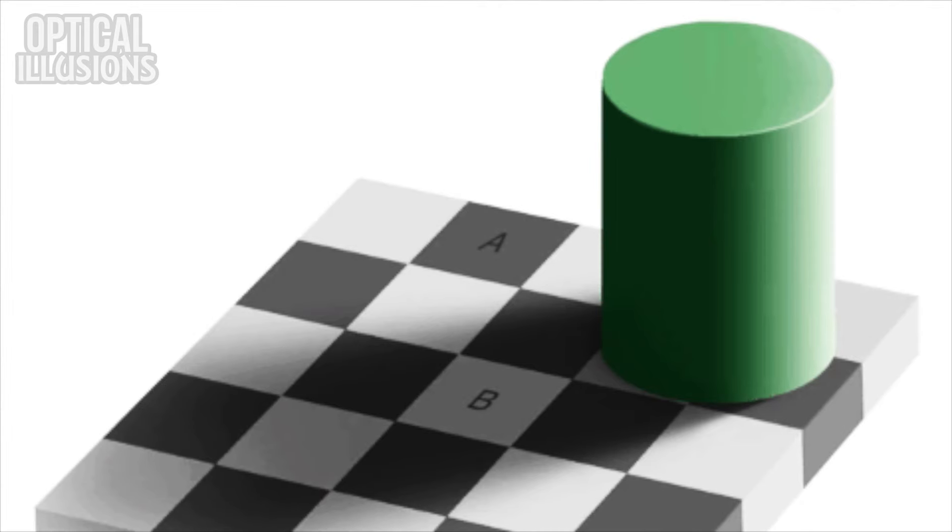Take a look at this one. Which square, A or B, do you think is darker? The boxes are the same color. Researchers at MIT investigated this illusion and found the reason that it works to be twofold.